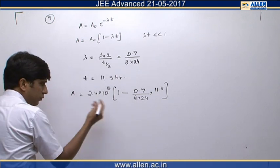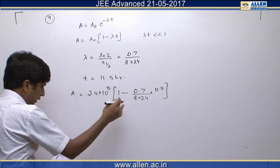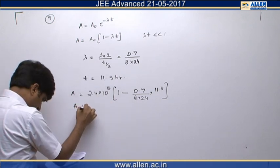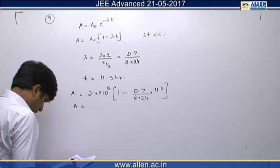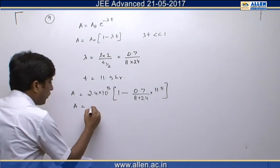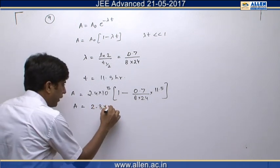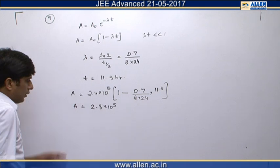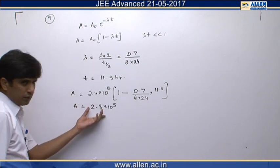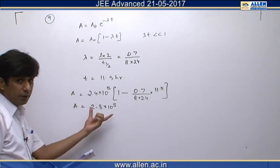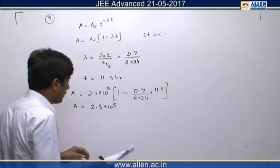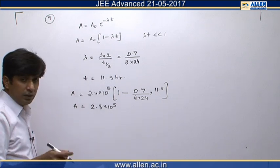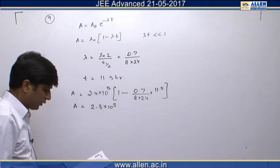From this calculation we get the value of A, which comes to be 2.3×10⁵ becquerel. This is the activity of the complete blood sample. The activity of the 2.5 mL blood sample is given in the question.